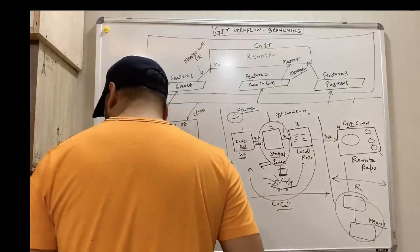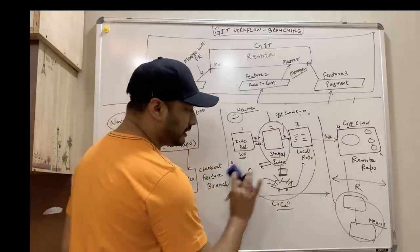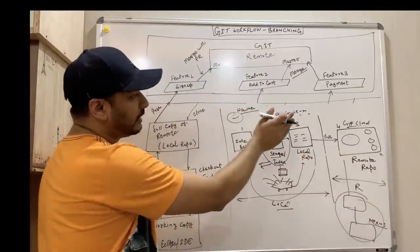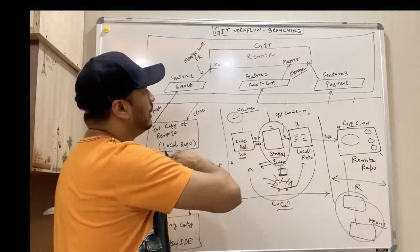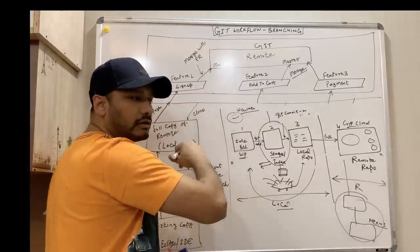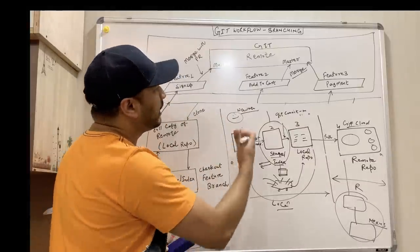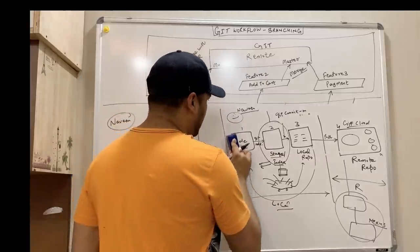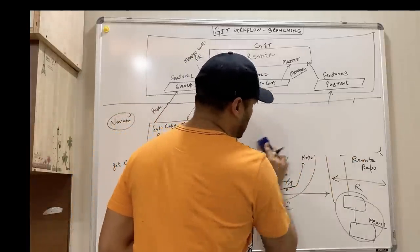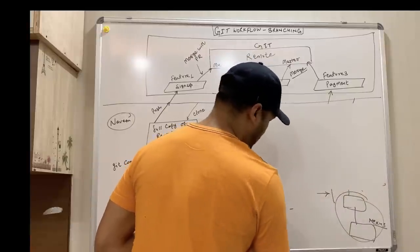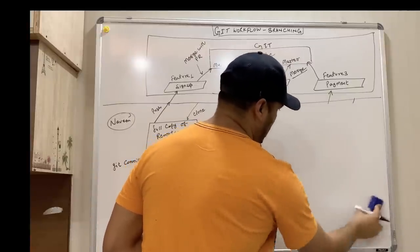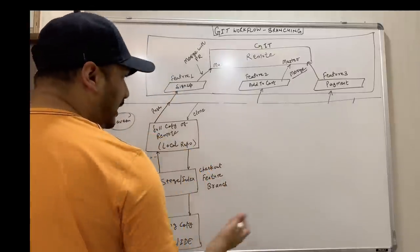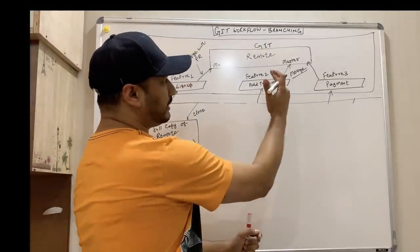Now let's talk about the branching concept. I explained this first so you can understand the entire diagram — how exactly push, pull, merging, cloning, checkout, and PR will work. Let me erase this and look at this particular diagram.